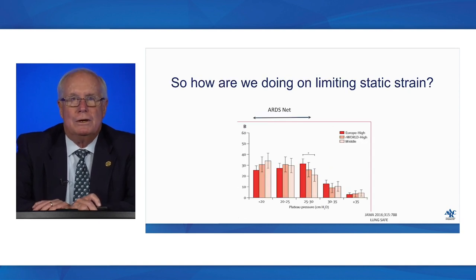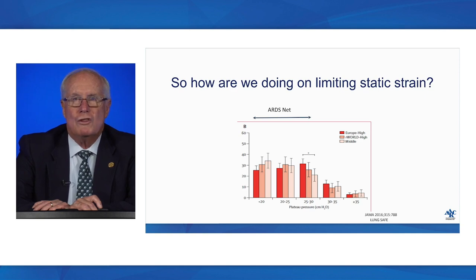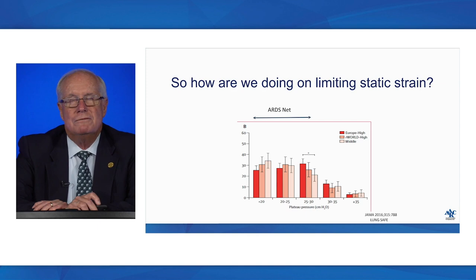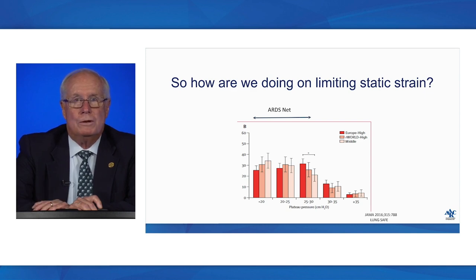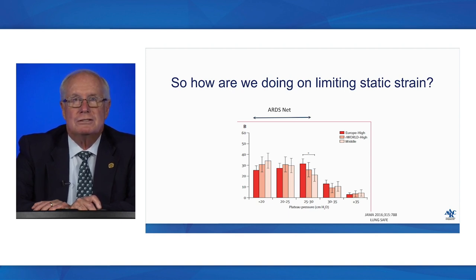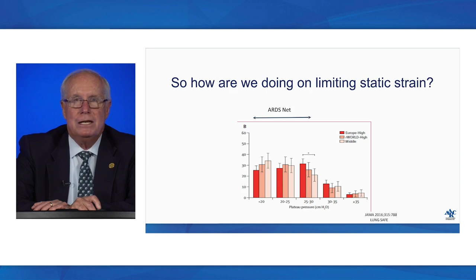The Lung Safe Study — a huge study of several thousand ventilated patients around the world — provides a snapshot of global ICU practice. The vast majority of patients around the globe have plateau pressures less than 30 cmH2O. Yes, there is a smattering between 30 and 35, but almost nobody goes above 35 cmH2O. So for goal number one — limiting maximal static strain — we're doing a pretty good job.